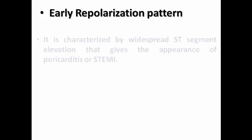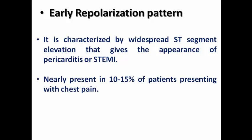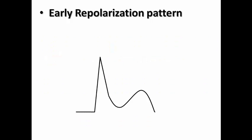Regarding the early repolarization pattern, it is characterized by widespread ST elevation that gives the appearance of pericarditis or STEMI, and is present in nearly 10-15% of patients presenting with chest pain. That's why it represents a diagnostic challenge. The early repolarization pattern has another common term, which is also called early repolarization pattern — referring to both a morphological and etiological description.